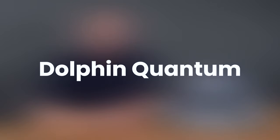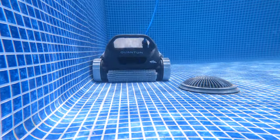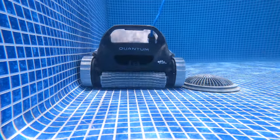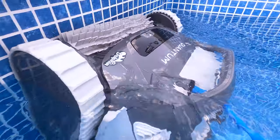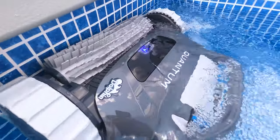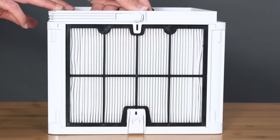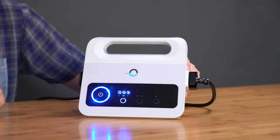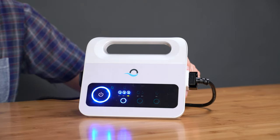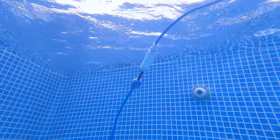Next, another unit from the Proline: the Dolphin Quantum. The Quantum is a great value as it has all the essential features at a lower price. It can clean pools up to 50 feet in length from the floor to the waterline. It has a standard fine filter basket, massive nano filter basket, dual commercial grade motors, a programmable power supply, a two-hour cleaning cycle, an anti-tangle swivel, and a two-year warranty.